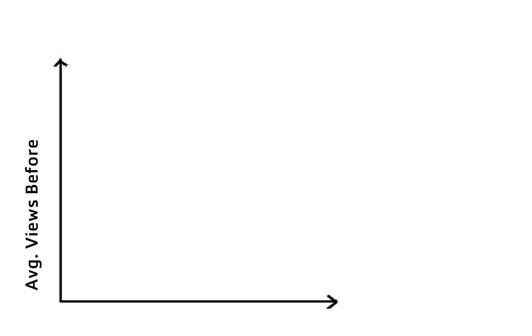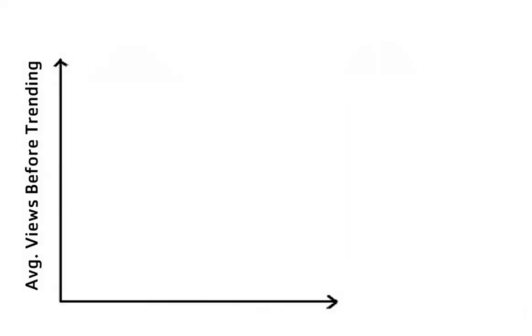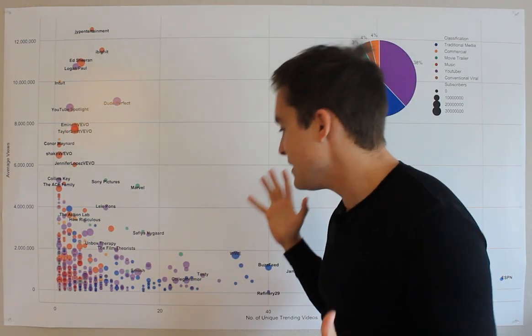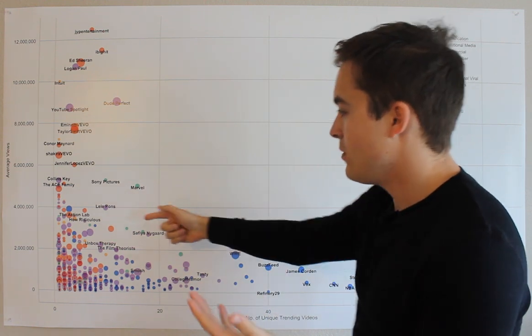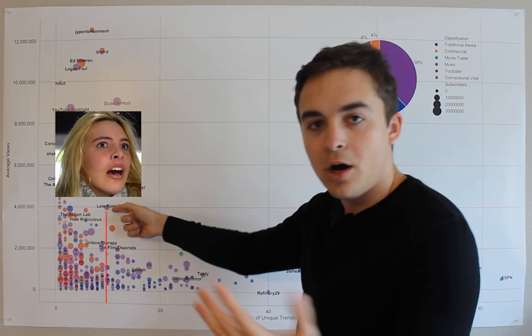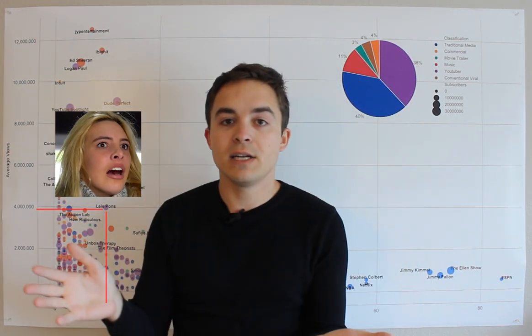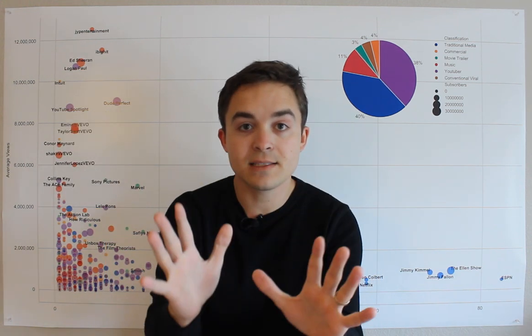The y-axis is the average view count a video had before it got on trending — so how many views they needed to get on trending. Then we have the number of unique trending videos. For instance, Lele Pons seems to have trended about 10 times on the trending tab, and it took her about 4 million views on average to get on trending those 10 times. That's how to read this.